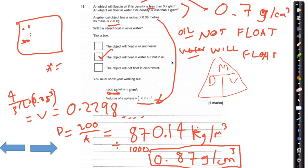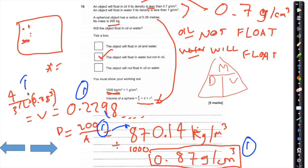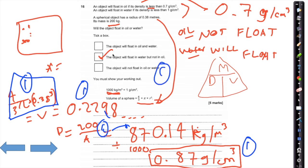The mark scheme: correct substitution giving 0.2298 for one mark, using density = mass/volume and getting 870 for the second mark, dividing by 1,000 to give 0.87 for the third mark, and the fourth and fifth marks for converting correctly and ticking the correct box.